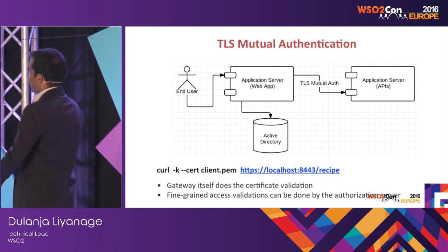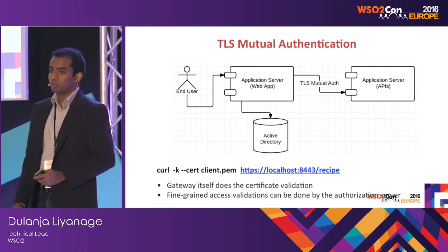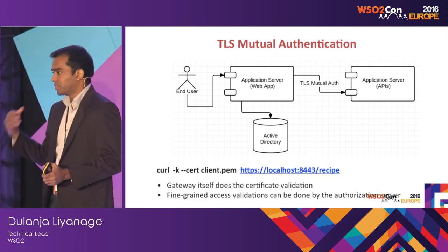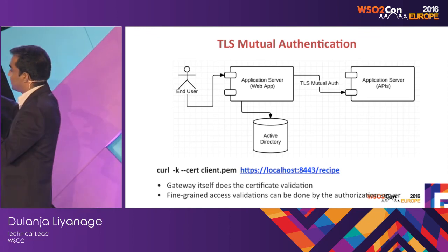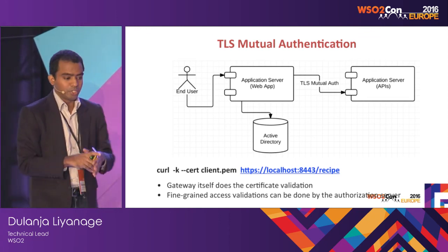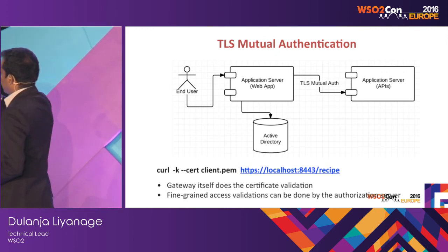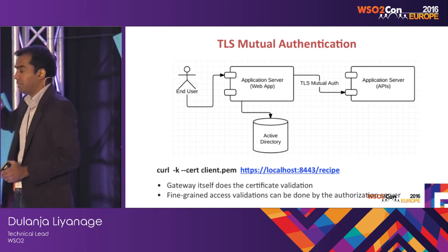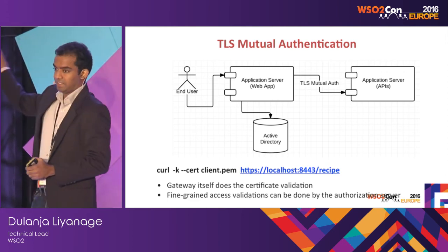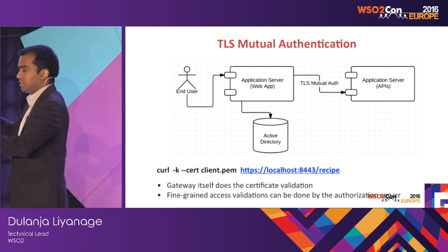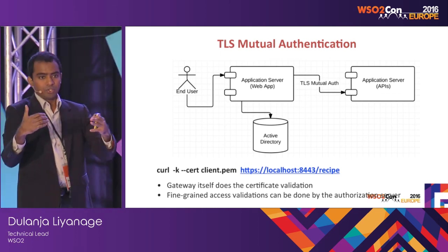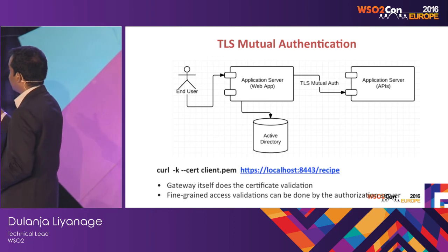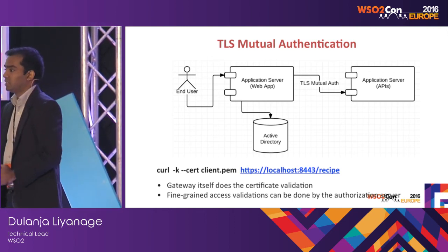Another traditional mechanism to secure your APIs is TLS mutual authentication. Server and client authenticate using X.509 certificates. This is mostly suitable for what we call a trusted subsystem — it can be your internal network. In this diagram, you can see the end user is trying to access a web app deployed in a WC2 application server, which in turn communicates with APIs hosted within the same network.